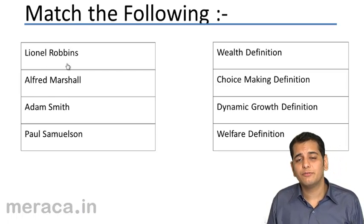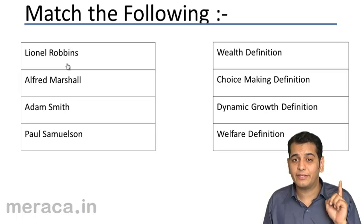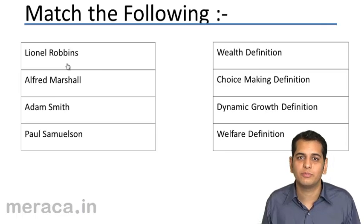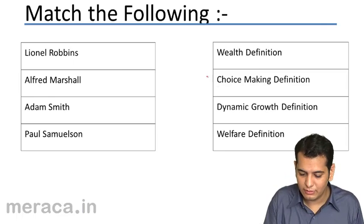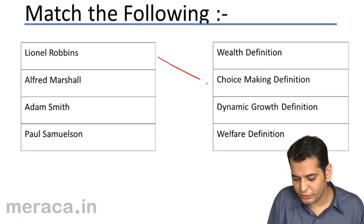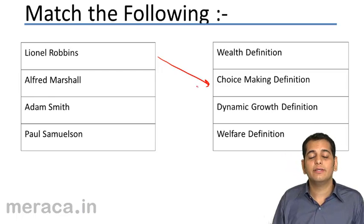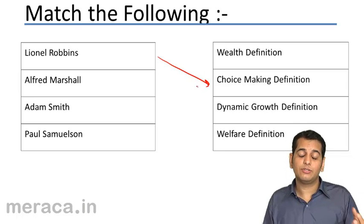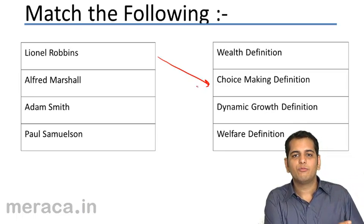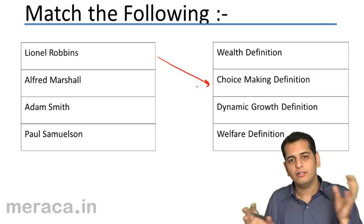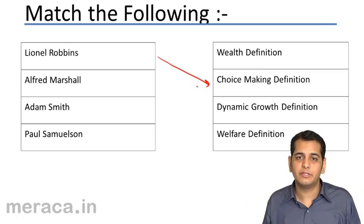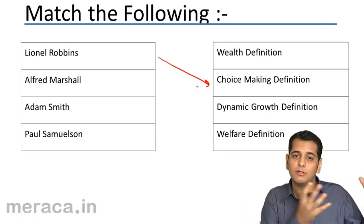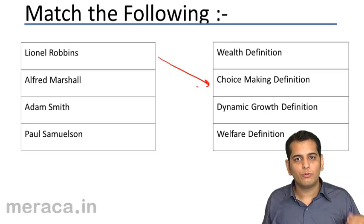Lionel Robbins gave which definition? Please remember that his definition is one of the most recognized definitions of economics. He gave the choice making definition. He said economics is a study about man in relation to unlimited wants and limited means, and how you strike a balance between them — how you make choices about which want you want to fulfill and which want you want to forgo.